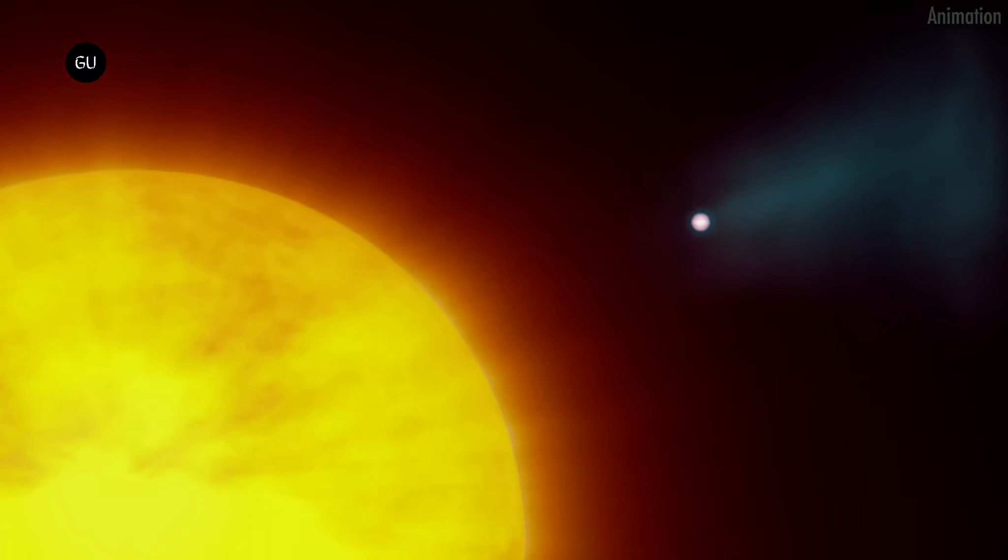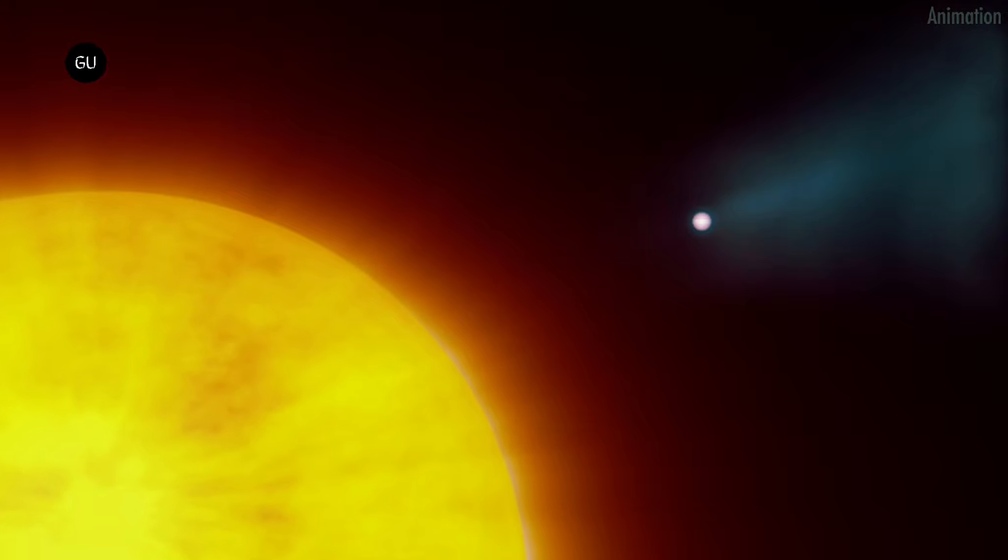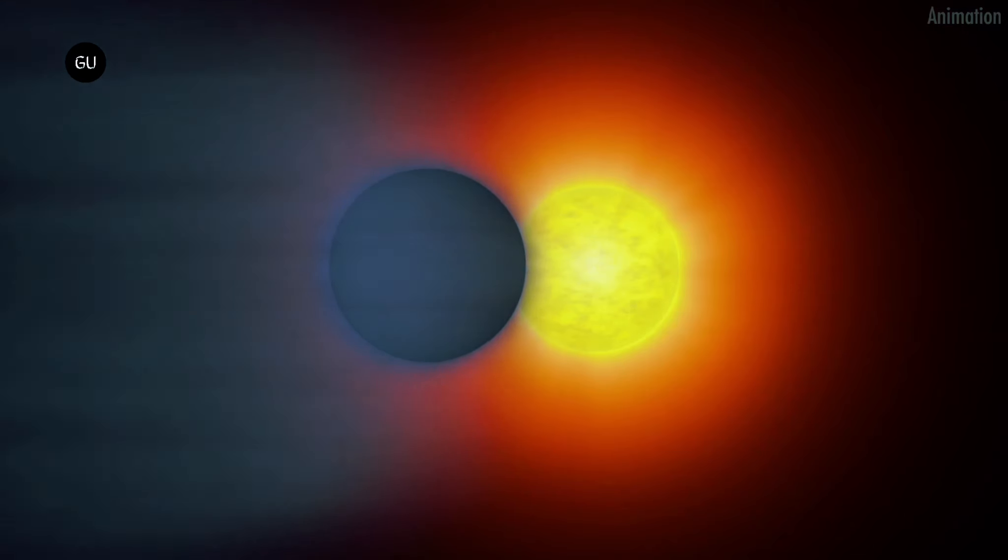Another possibility is that the stellar wind is shaping the planetary outflow, causing it to be observable at some times and not at others.